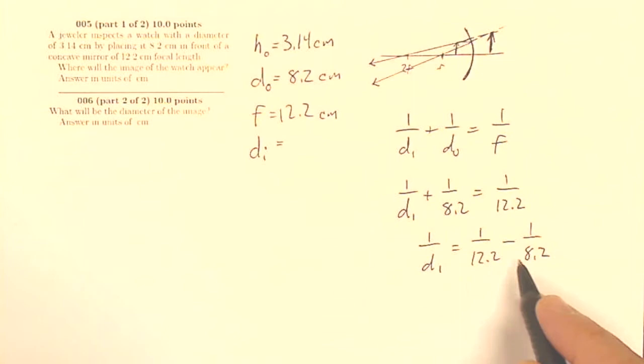I have to inverse that answer to get my di. So from here I can get di equals, and it's going to wind up being a negative number.